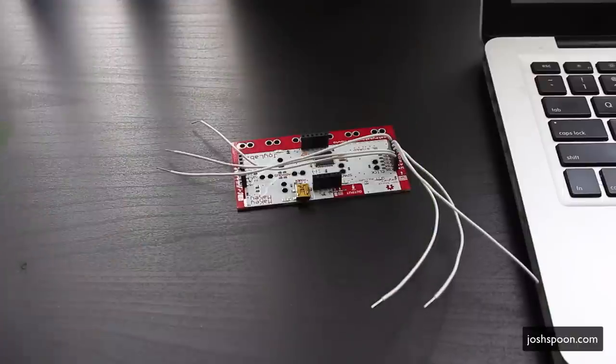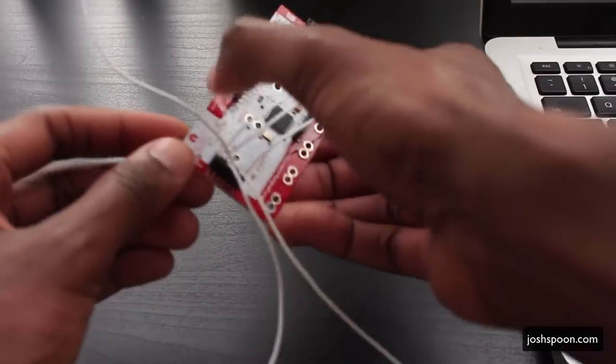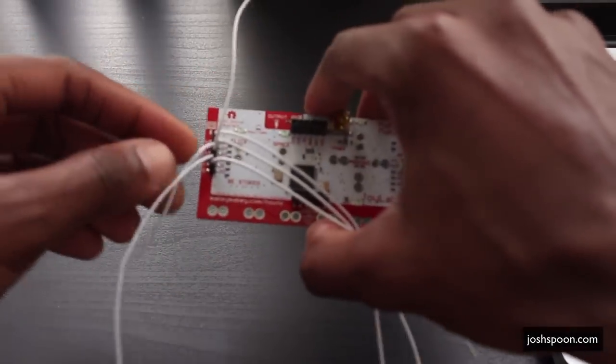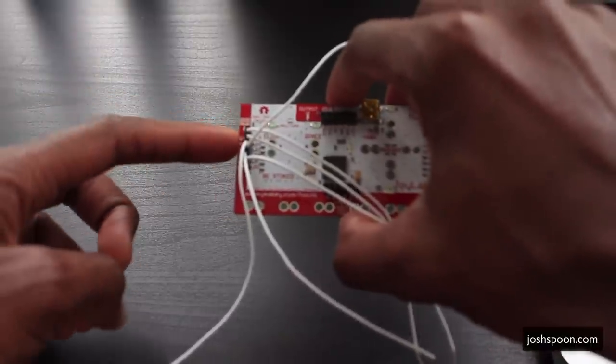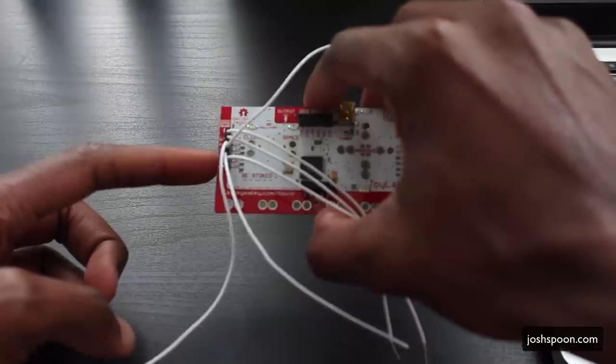So here's the Makey Makey box and the Makey Makey. It has a bunch of lead wires here, connected to, if you can see, W, A, S, D, and F.